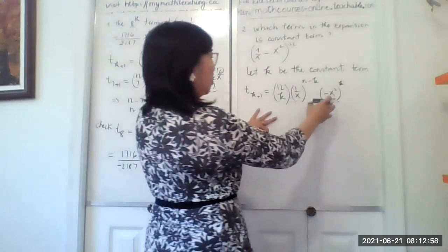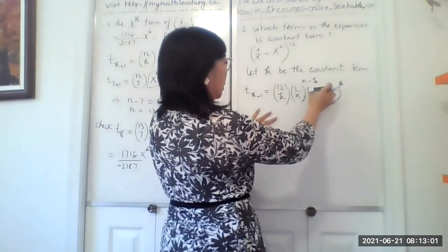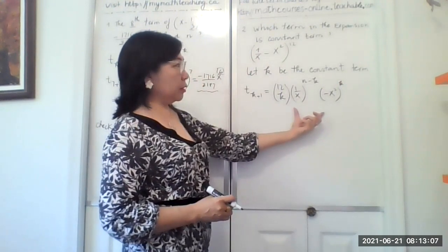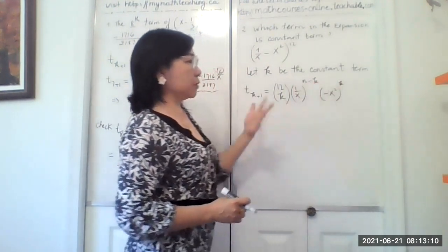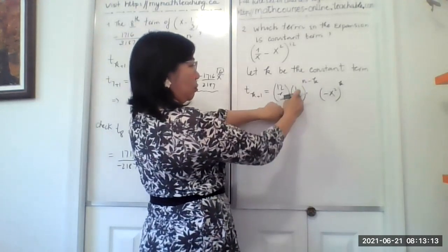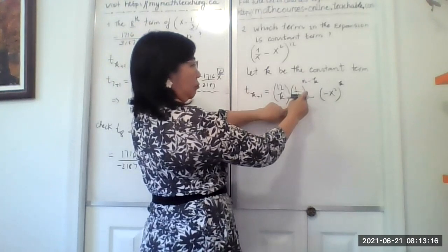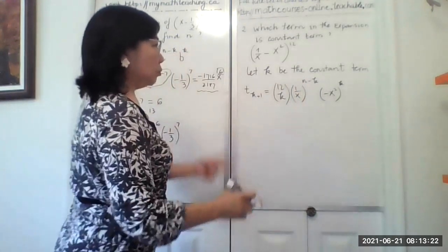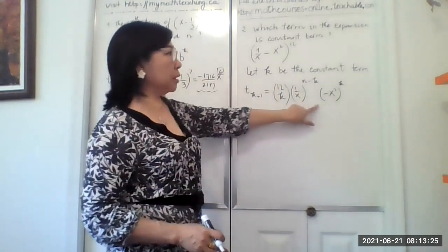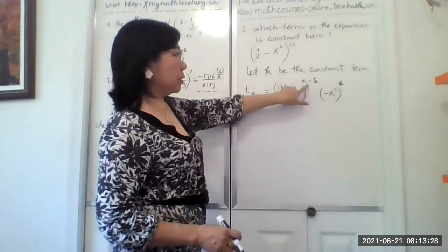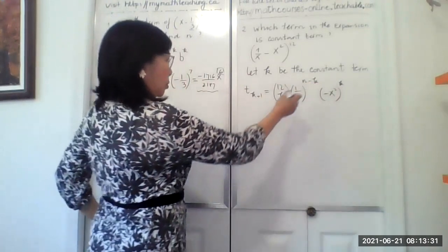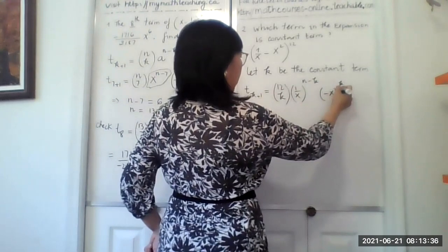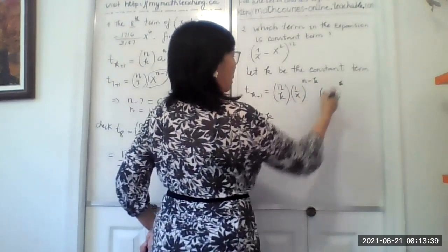Remember, we're talking about constant term means there's no letter. And the only way there's no letter happens if all of this power equals 0, because anything to power 0 equals 1. So the constant term, the letter had to disappear. And the only thing for it to disappear is that their power had to equal 0.